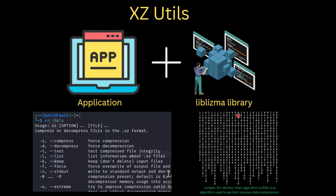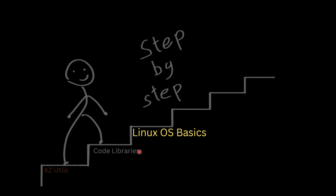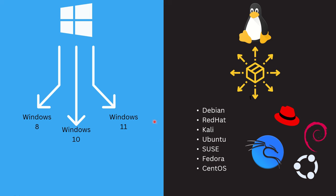XZ Utils uses the liblzma library for its backend work. Now let's jump to Linux OS basics to understand how this library gets distributed across Linux systems and what the impact of a compromised library would be. Just like in Windows, where Microsoft is the vendor maintaining different versions and flavors of Windows including server operating systems, Linux has a similar structure.